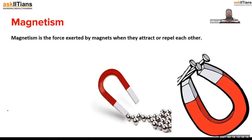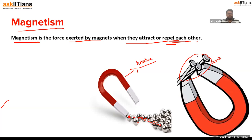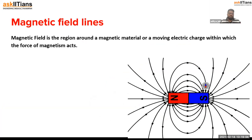Magnetism is the force exerted by magnets when they attract or repel each other — it is the property of a magnet by which it attracts or repels other objects. You can see in this diagram: this is a horseshoe magnet attracting iron balls due to the property known as magnetism. Similarly, a second horseshoe magnet is attracting iron nails by the same property.